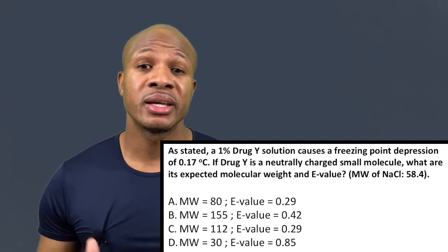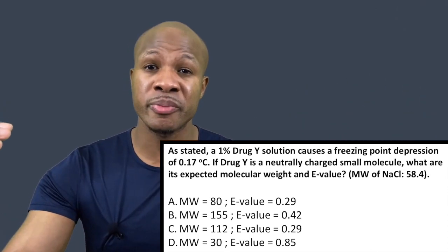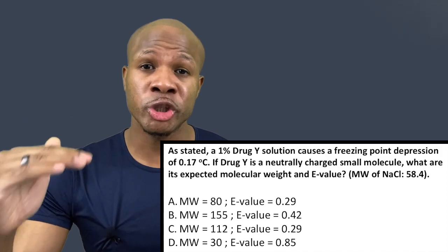To find the E value, we take a certain mass of sodium chloride that results in a certain number of particles and divide it by the equivalent mass of drug Y that results in the same number of particles. We know normal saline — 0.9% sodium chloride — gives a freezing point depression of 0.52. So a 0.29% sodium chloride solution will lower the freezing point by 0.17 degrees Celsius. We can now make an equivalent comparison: a 1% solution of drug Y lowers the freezing point by 0.17 degrees Celsius, and so does a 0.29% sodium chloride solution — meaning they produce the same number of particles.